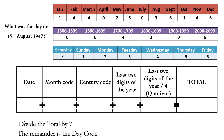Let's fill in the details in the table. The date is 15. The month code — August has the code 3. The century code: the year is 1947, which falls between 1900 to 1999, so the century code is 0. The last two digits of the year are 47. And the last two digits divided by 4: 47 divided by 4 gives a quotient of 11 (ignore the remainder). The total of 15, 3, 0, 47, and 11 is 76.